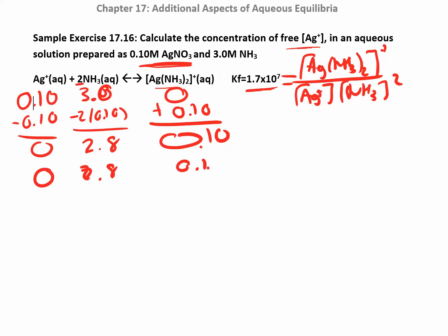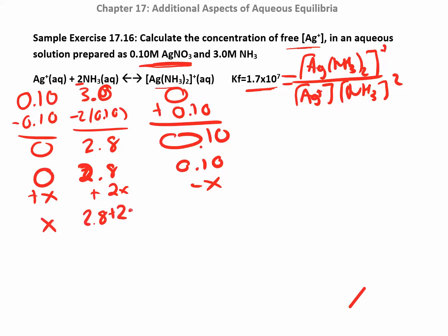The final concentrations from the first table become the initial concentrations for the second table. Now I'm going in the reverse direction — I went all the way forward first, and now I'm backtracking. So I subtract x from the complex ion, add 2x to ammonia (because of that coefficient of 2), and add x to silver. That x for silver is really what I'm looking for — the free silver ion concentration. This gives 2.8 plus 2x for ammonia and 0.10 minus x for the complex ion.